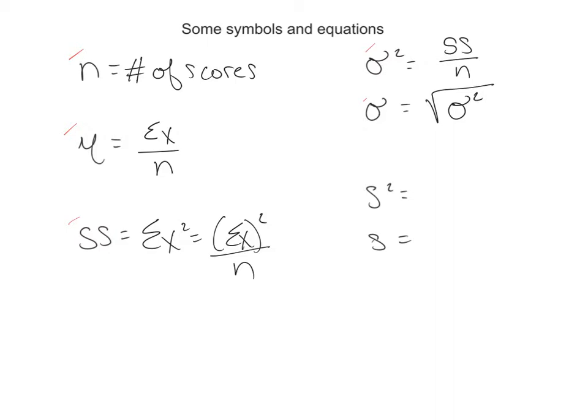So if your variance for the population is 25, well then your standard deviation is 5. If your variance is 49, then your standard deviation is 7. So whatever you get for variance, you just take the square root of it, and you find standard deviation. This one over here is for population, these equations are for population.